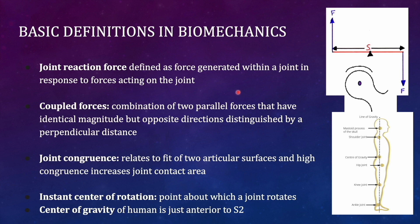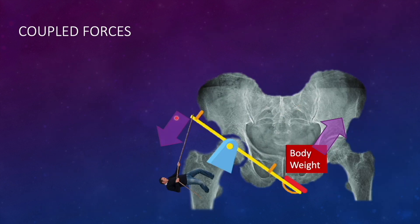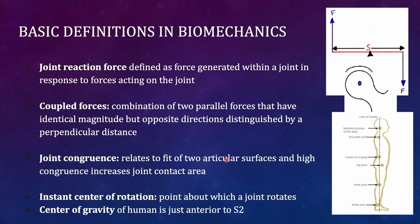Coupled forces are two parallel forces which are usually equal in magnitude but opposite in direction, with a fulcrum in between — they are usually balanced. For example, the abductor muscles pull the pelvis in one direction, which automatically lifts the body weight in the proximal direction. The abductor pull and the opposing force on the pelvis are the coupled forces, and the fulcrum is the hip joint.